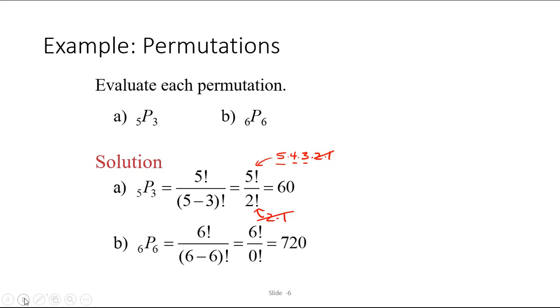Interestingly, 6P6 is 6 factorial divided by 0 factorial, and remember, 0 factorial is by definition just 1. So in fact, 6P6 is the same thing as just 6 factorial, or 720. In general, nPn, if you have the same number in both places, that's telling you to start with n and count down by 1 n times, which gives you n factorial, n all the way down to 1.